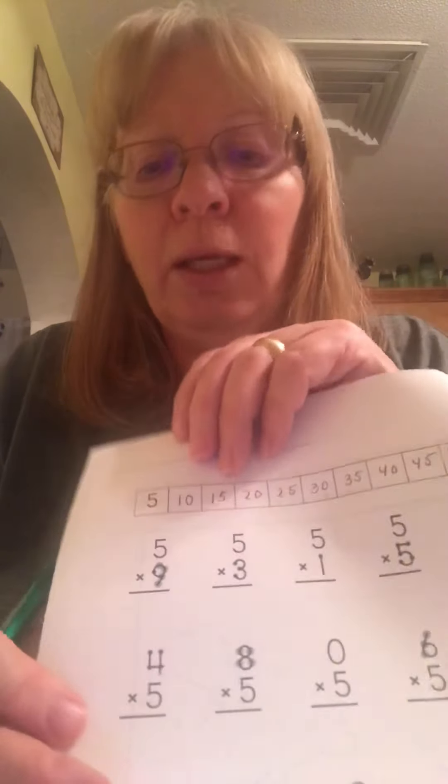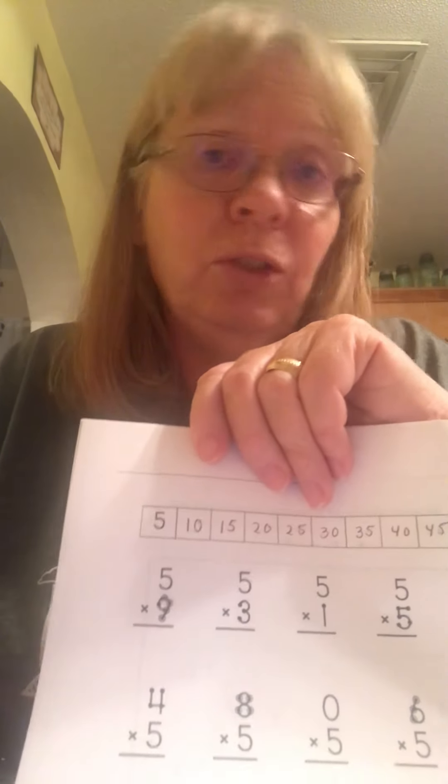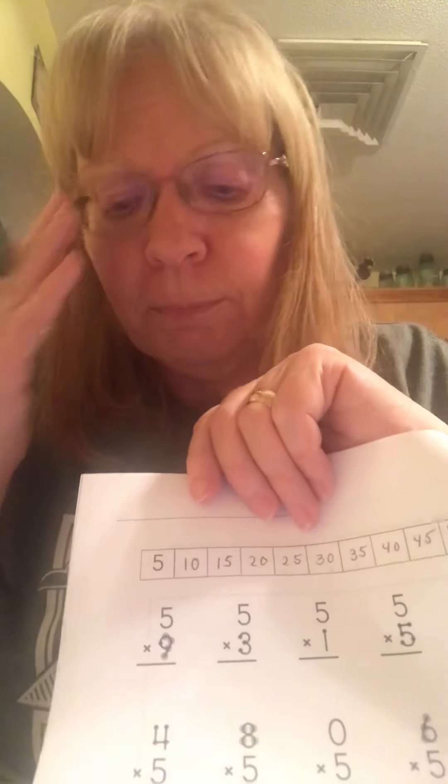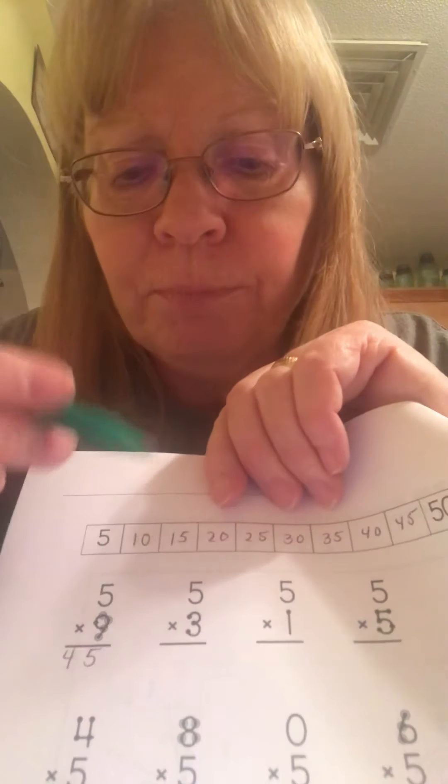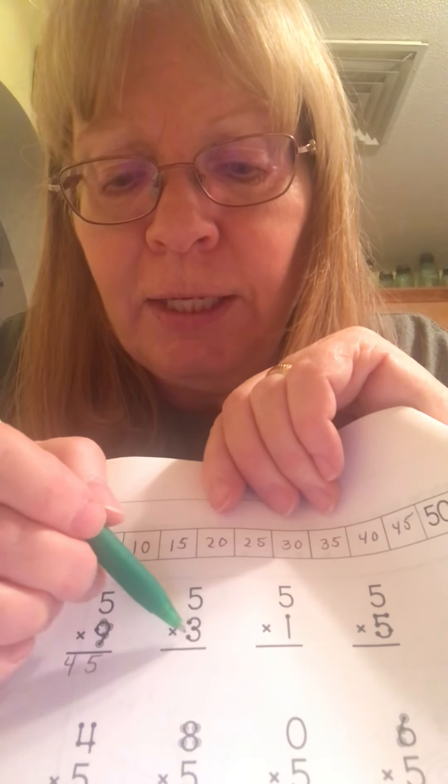Now, when I do the multiplication, all I'm going to do is count by fives. So — five times nine. I'm going to start with just five: 5, 10, 15, 20, 25, 30, 35, 40, 45. So the four goes in the tens place and the five goes in the ones place. And five times three — 5, 10, 15. The five goes in the ones place and the one goes in the tens place.